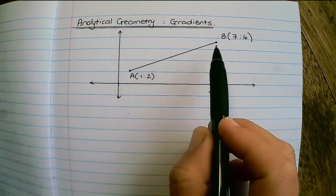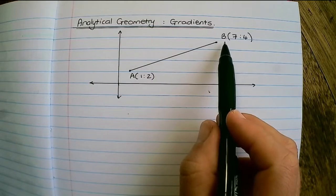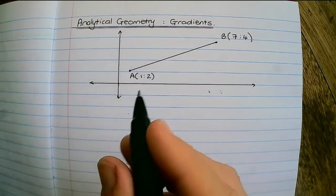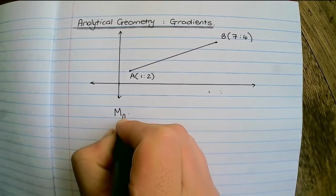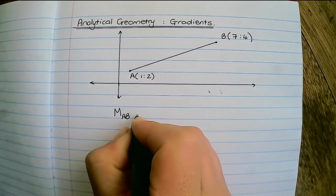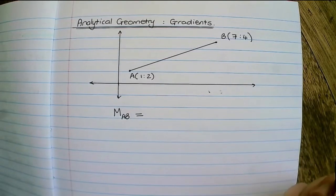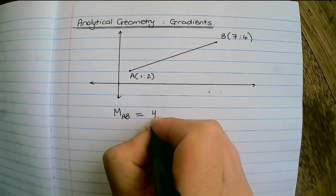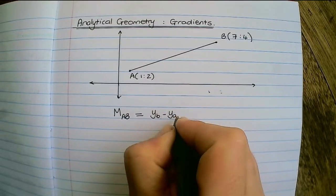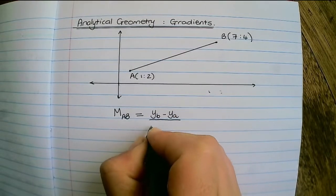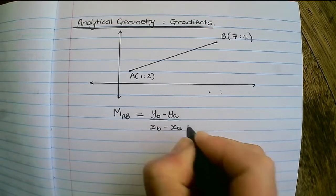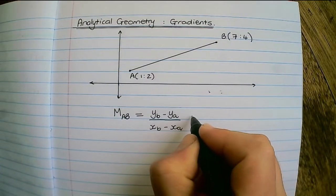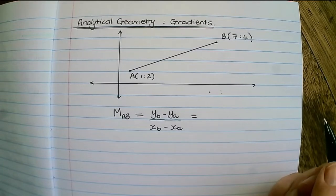point A and point B. If you want to find the gradient, we would say the gradient between A and B would be the y of B minus the y of A over the x of B minus the x of A. Let us quickly see how we would substitute.